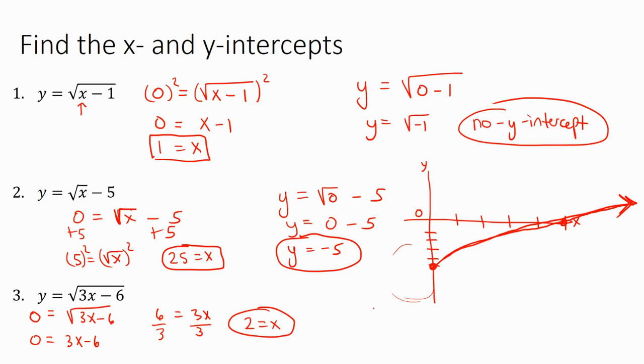And then for the y-intercept, I can already tell there's not going to be one because if we plug in 0 for x, we get 3 times 0, which is 0, and then minus 6, we would get square root of negative 6, which does not exist. So there is no y-intercept for number 3.